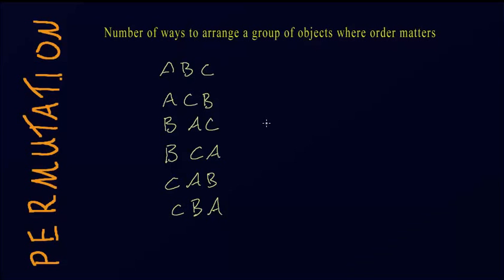So permutations is about having a group of objects and arranging them in such a way that the order, the position of these objects with respect to another object matters. So let's try an example similar to this one.